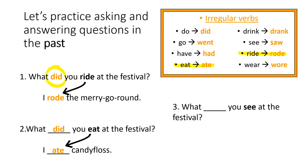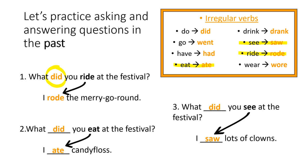And the last one: what did you see at the festival? We know we're missing did. What did you see at the festival? And the answer: I saw lots of clowns. We need to change see into the past. See in the past is saw. So, I saw lots of clowns.